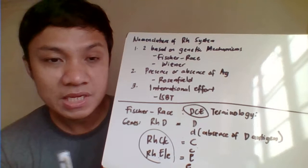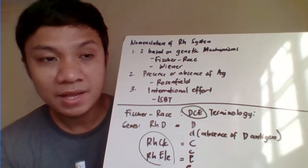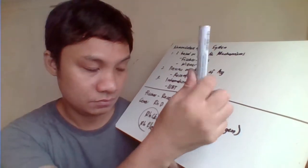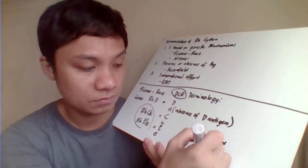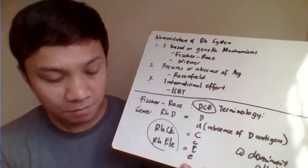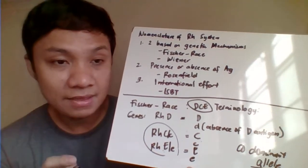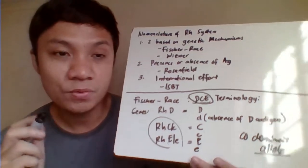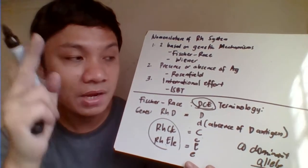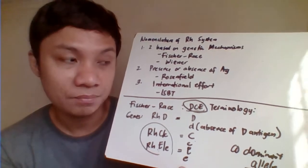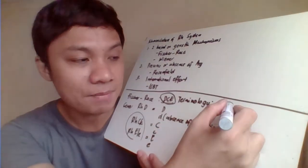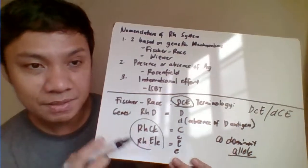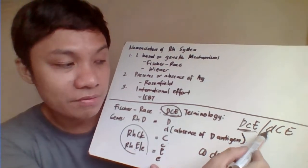Our genotype is inherited from our parents in a codominant manner. One set of DCE — depending on whether they are uppercase or lowercase — is inherited from the mother, and another set is inherited from the father. For example, if DCE from mother and DCE from father make up the genotype, the phenotype depends on whether each position is heterozygous or homozygous.